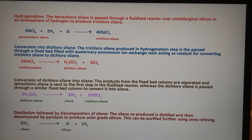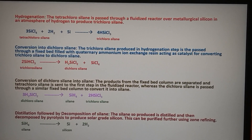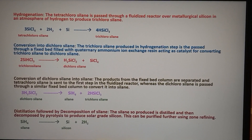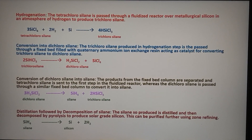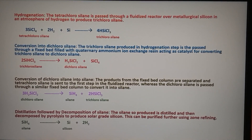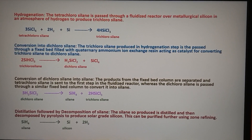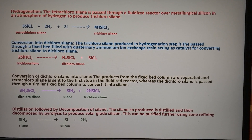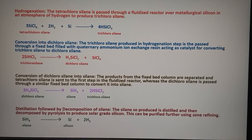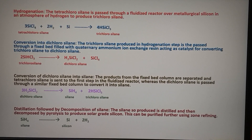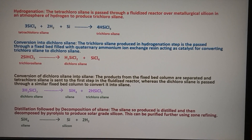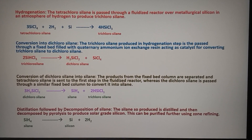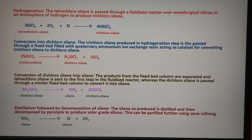The trichlorosilane which is formed as a by-product is sent back to the ion-exchange resin containing quaternary ammonium resin to be converted into dichlorosilane. The silane produced in the third step is led to the distillation tower where, after distillation, it is decomposed at high temperature — that is, pyrolysis — to produce silicon. This silicon which is produced is then purified further using the zone refining process. There are four steps and the four reactions are shown here for you to understand properly.